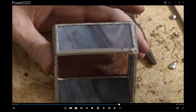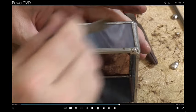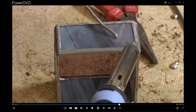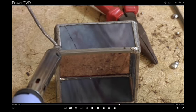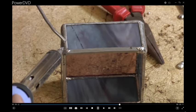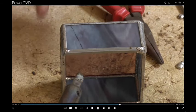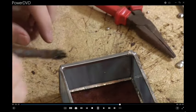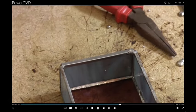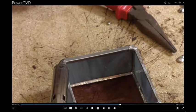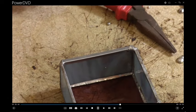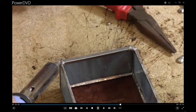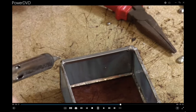You see what's happening here? I'm soldering to this edge, this edge, and the edge down below. So we're getting kind of a triangle of strength. We want it to be flat on top.